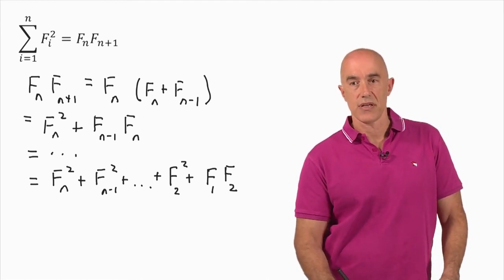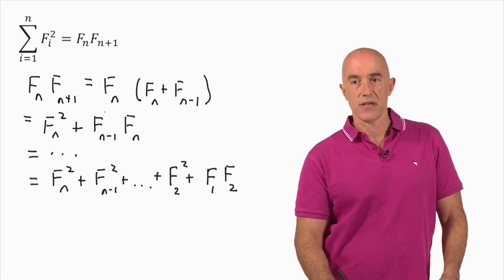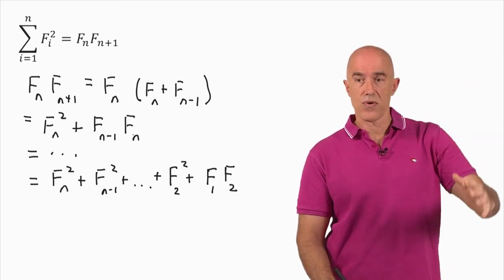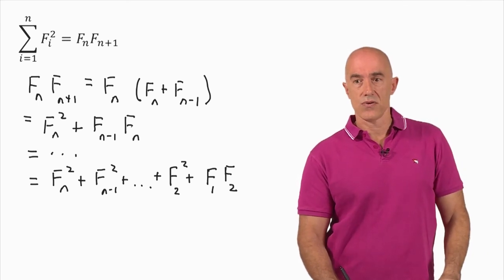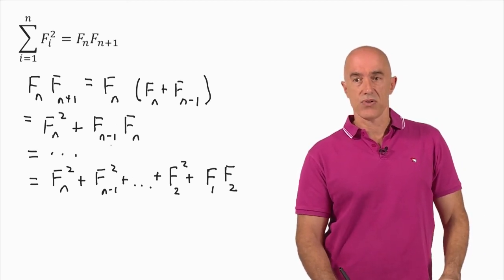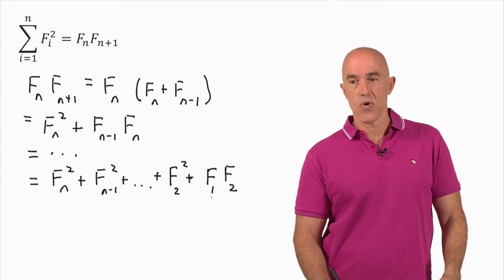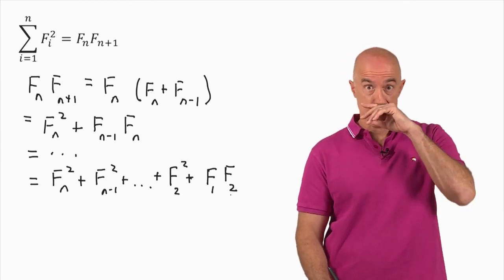And we bring it all the way down to n equals 2, right? So then we end up with a F sub 1 and an F sub 2 at the end.